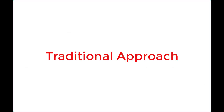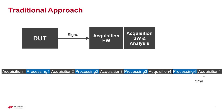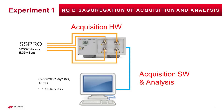Starting with the traditional approach first. Acquisition and analysis happen on the same computer hardware; therefore acquisition and analysis have to take place sequentially. Experiment 1 uses a four-channel DCA-M connected to a PC with Flex DCA software running on a 2.8 gigahertz i7 CPU.